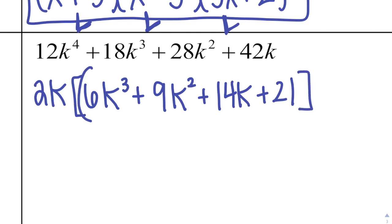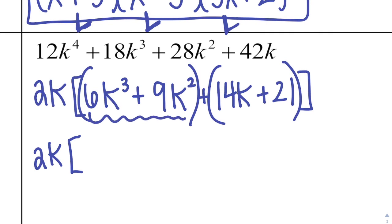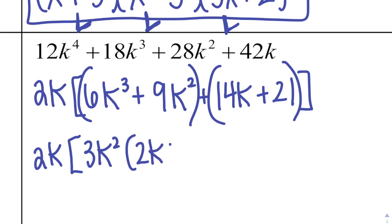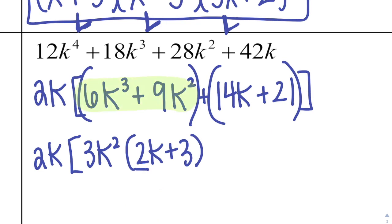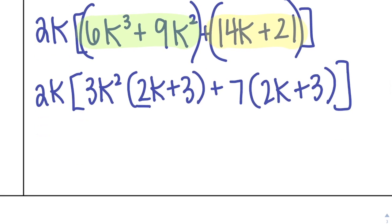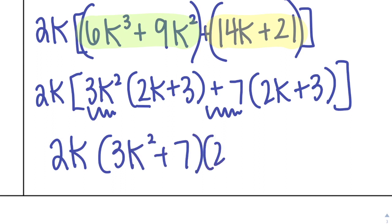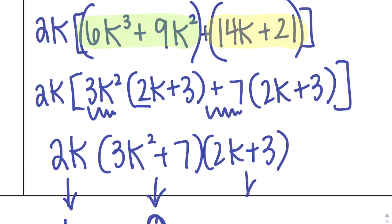Now grouping it — not forgetting my 2k out front. From the first half I take out 3k² and I'm left with 2k + 3: 6k³ divided by 3k² is 2k, and 9k² divided by 3k² is 3. From the second half, 14 and 21 have a 7 in common with no other variable, so I take out 7 and get 2k + 3 again. So the factors are 2k times (3k² + 7) times (2k + 3) — a linear, a quadratic, and a linear factor.